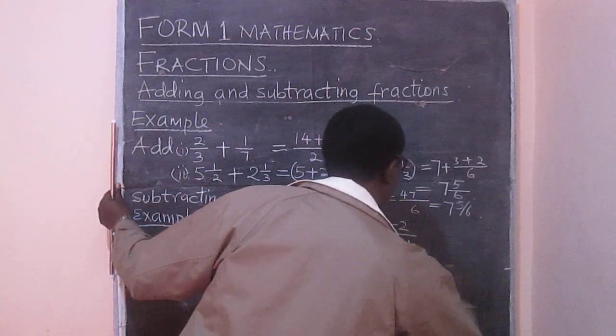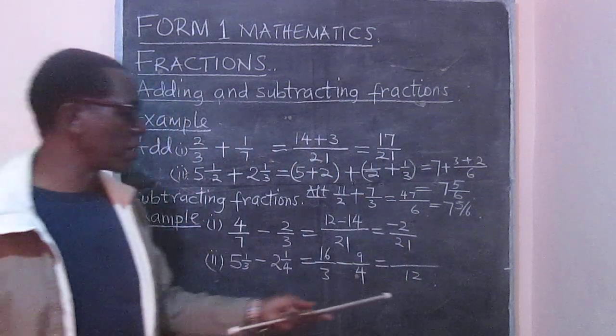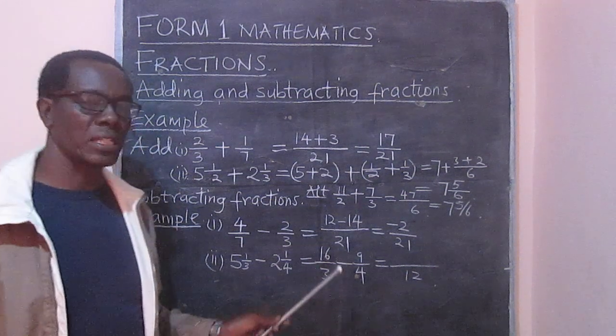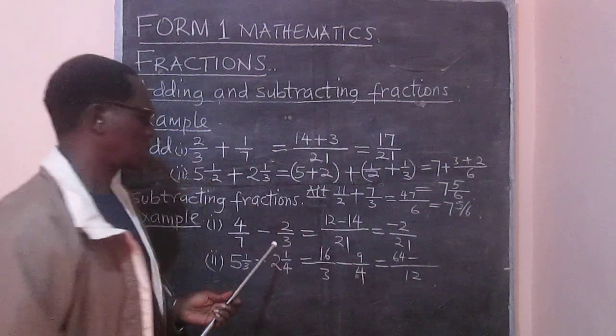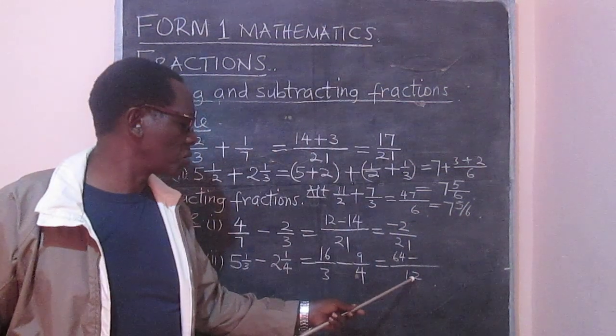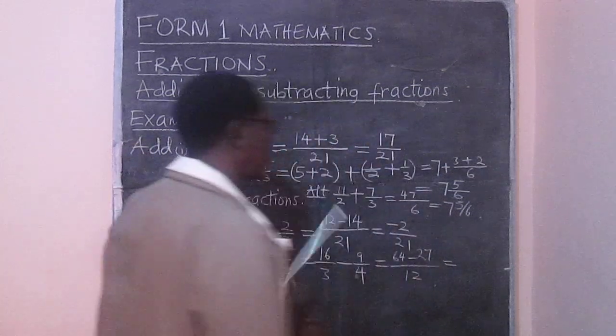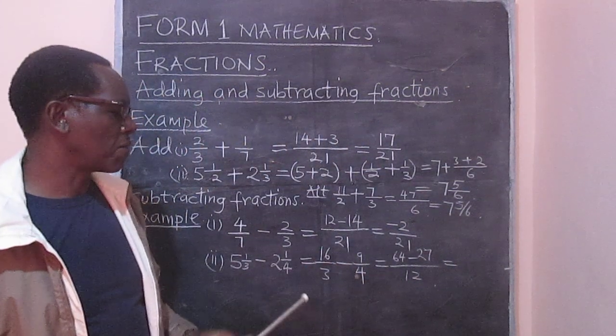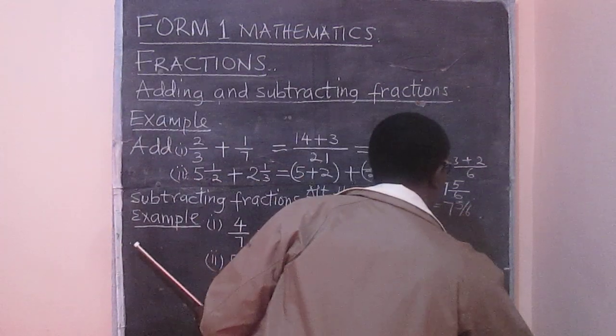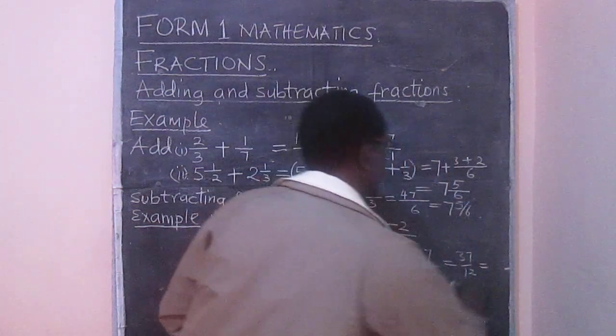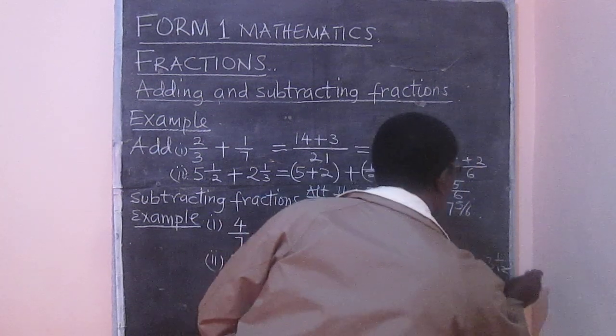Again we need the LCM, and in this case the LCM is 12. 12 divided by 3 is 4, 4 times 16 is 64. So we have 64 subtract, now this is 12 divided by 4 is 3, that's 27. And therefore we have 64 minus 27 over 12. And that gives us 37 over 12, which is the same as 3 and 1/12.